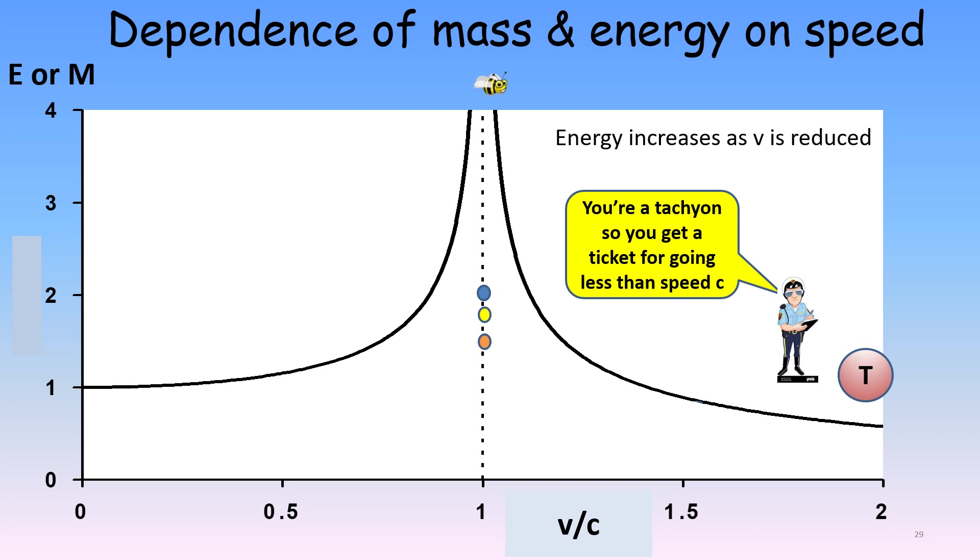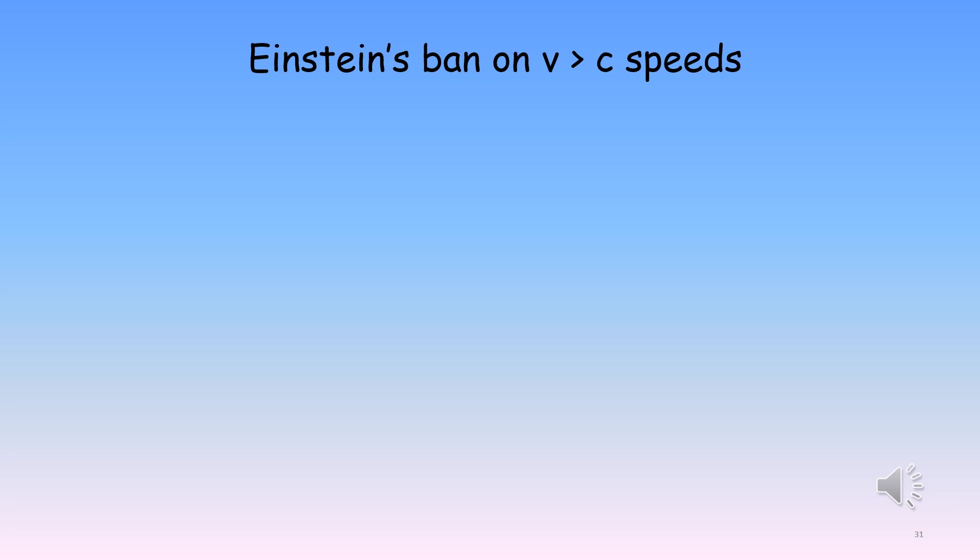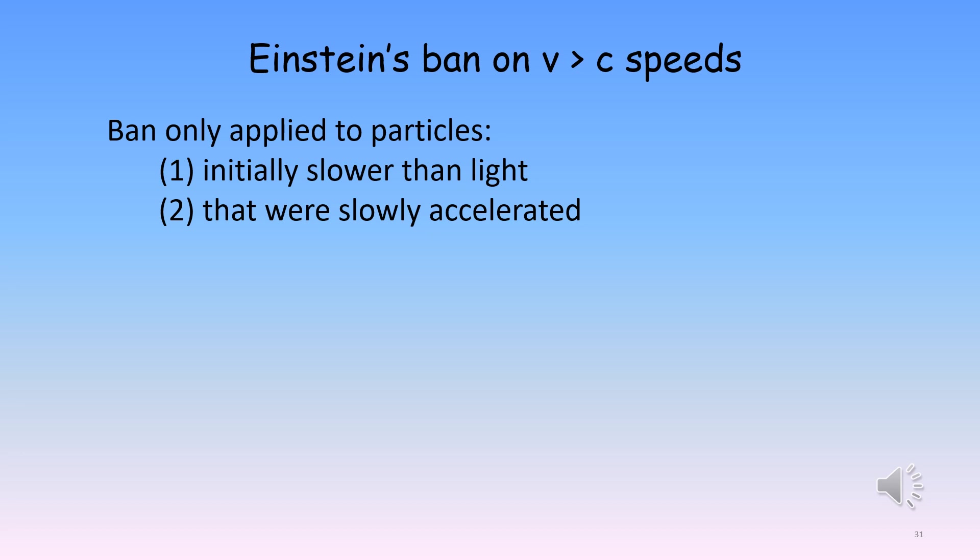Strangely, tachyons have to have an imaginary value for their mass m in order for this to work, meaning that their m squared is negative. This, of course, is in contrast to ordinary matter with a real mass, or a positive m squared, and photons, or particles of light, with a zero mass. The idea of faster-than-light particles does not really conflict with Einstein's ban on faster-than-light speeds. That's because the ban only applied to particles initially moving slower than light that were then slowly accelerated, two conditions Einstein stated in his 1905 relativity paper. Therefore, there'd be no problem with particles that always exceeded light speed from the very moment of their creation.